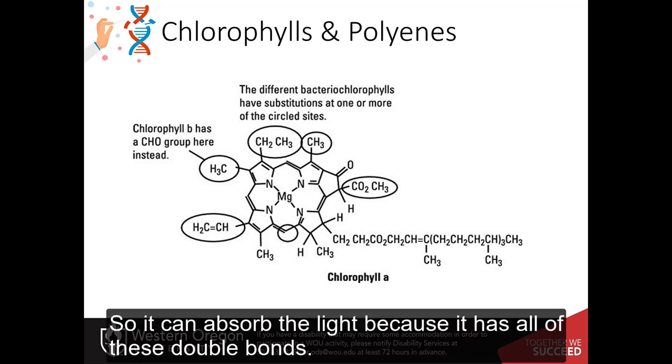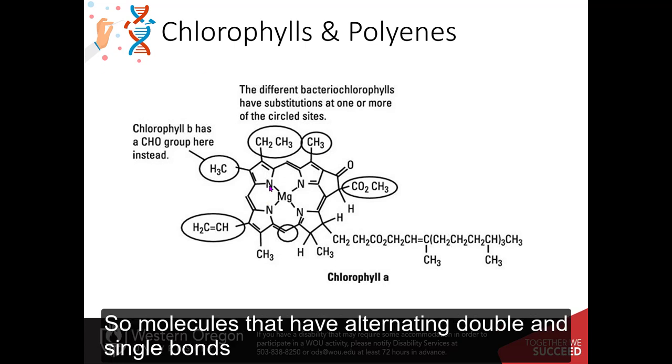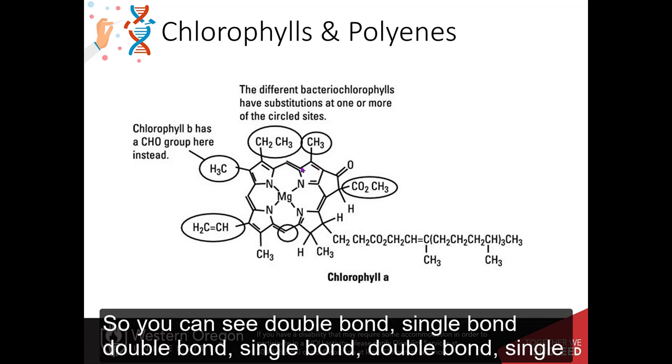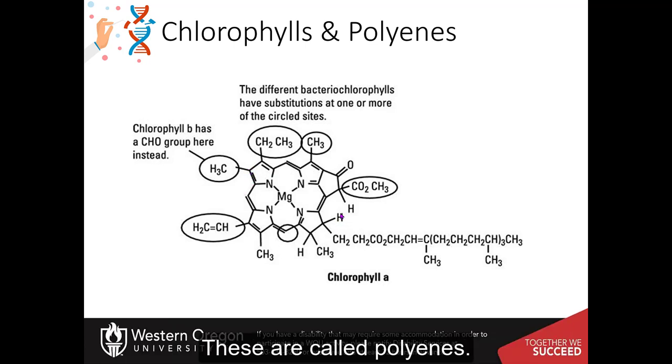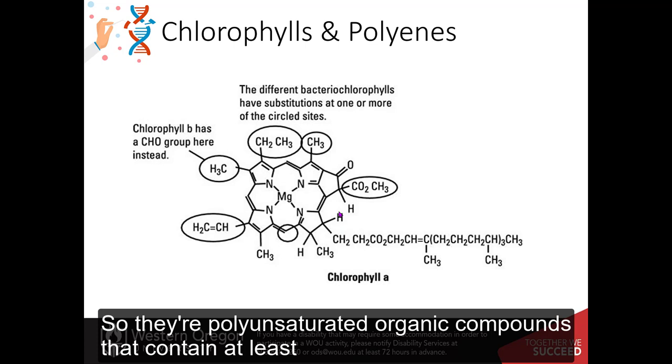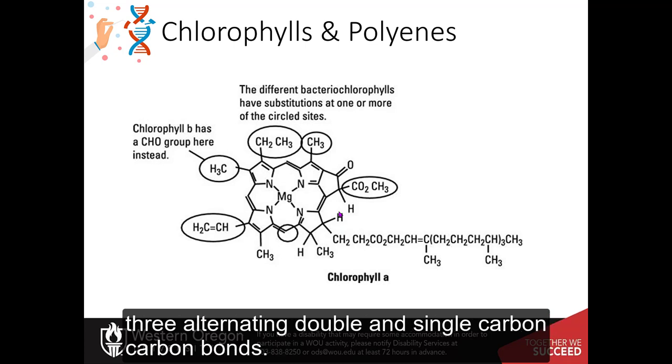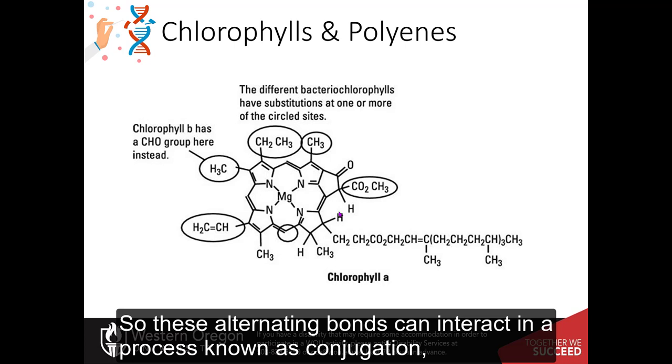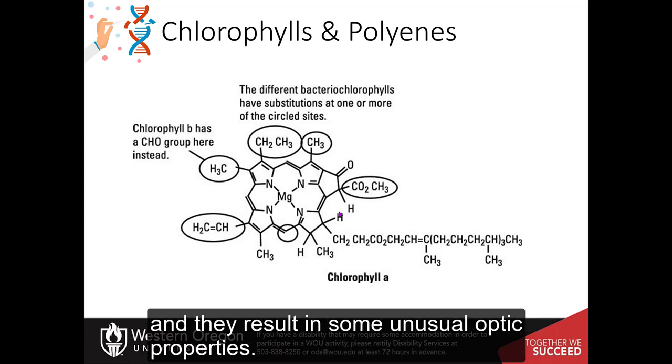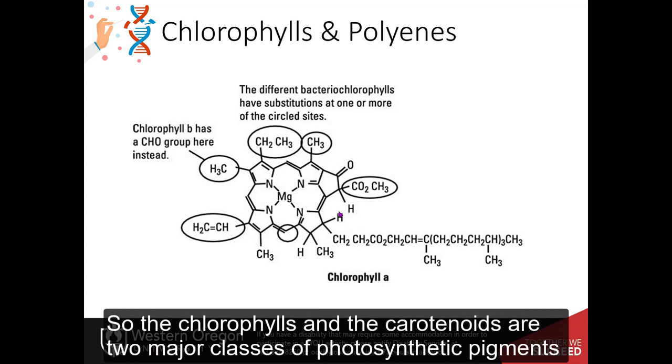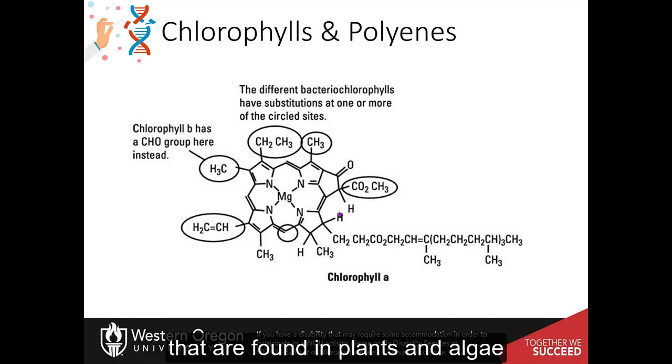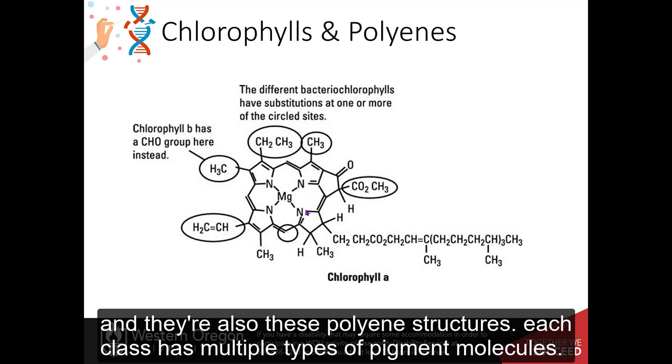So it can absorb the light because it has all of these double bonds. So molecules that have alternating double and single bonds, so you can see double bond, single bond, double bond, single bond, double bond, single bond, double bond, single bond, double bond. These are called polyenes. They're polyunsaturated organic compounds that contain at least three alternating double and single carbon-carbon bonds. So these alternating bonds can interact in a process known as conjugation, and they result in some unusual optic properties.